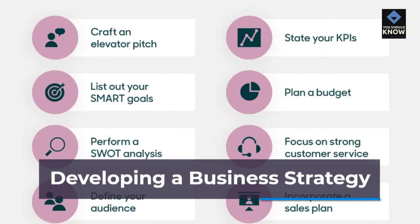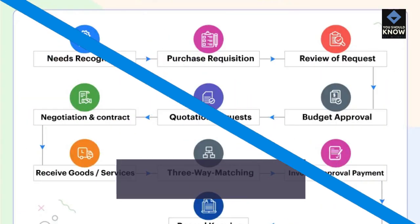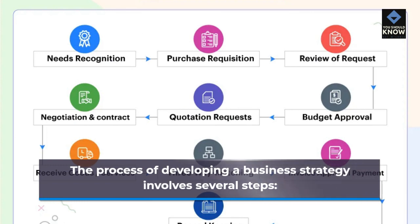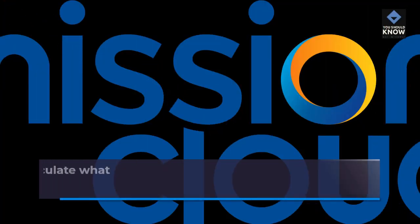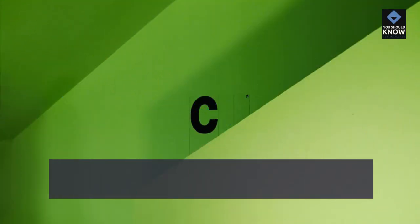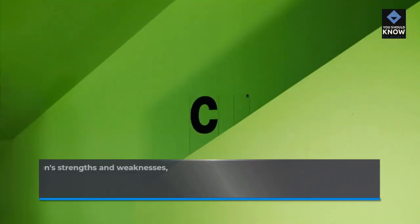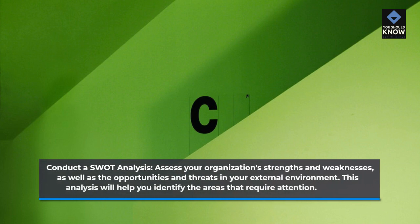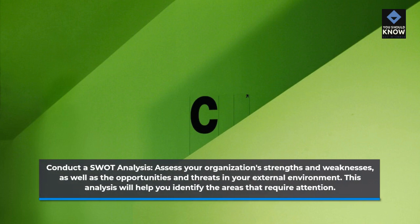Developing a business strategy. The process of developing a business strategy involves several steps. Define your vision and mission: Clearly articulate what your organization aspires to achieve and why it exists. Conduct a SWOT analysis: Assess your organization's strengths and weaknesses, as well as the opportunities and threats in your external environment. This analysis will help you identify the areas that require attention.